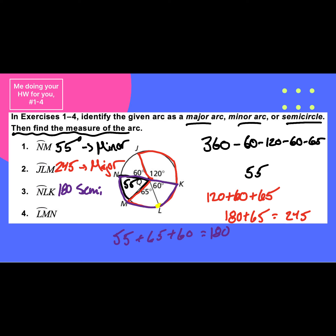And the last one — LMN — would be 65 and 55. Brayden's right — that's minor.